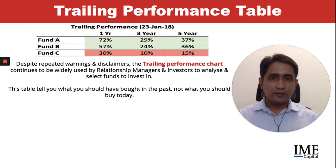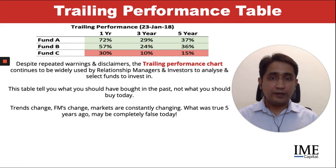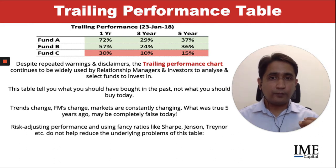This table tells you what you should have bought in the past, not what you should be buying today. Trends change, fund managers change, economies change, markets are constantly changing. What was true five years ago may be completely false today. Risk-adjusting performance and using fancy ratios such as Sharpe, Treynor, and beta do not help address the underlying problems of this table.